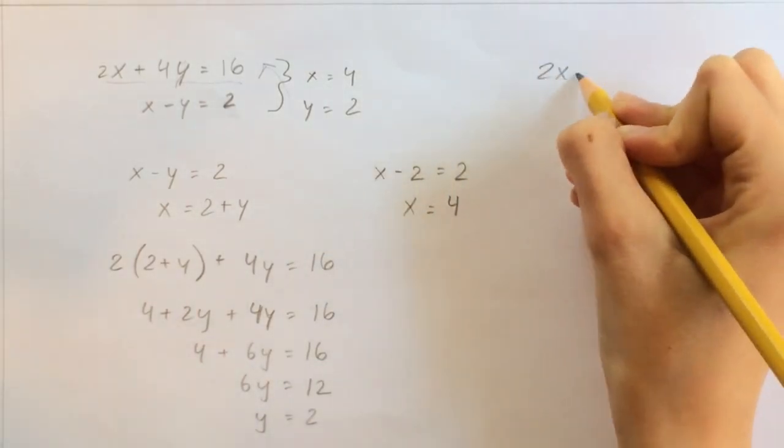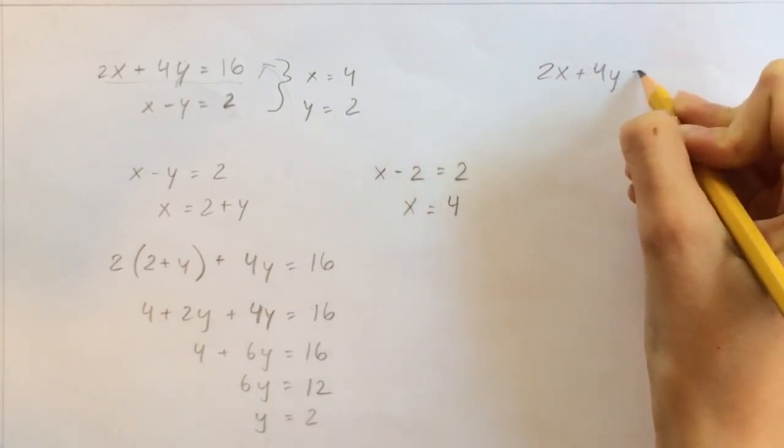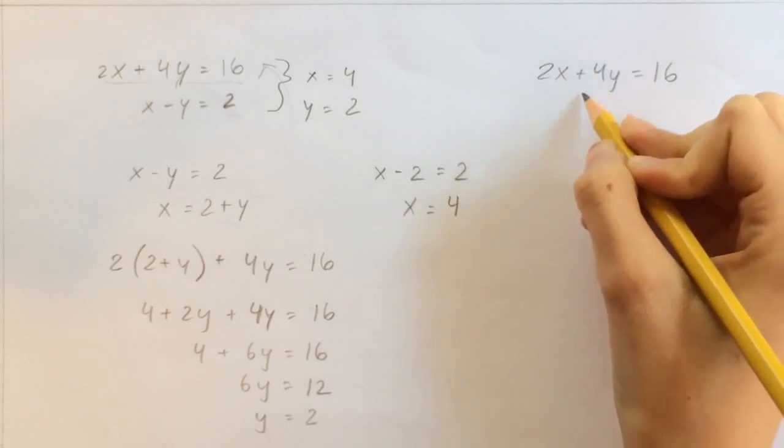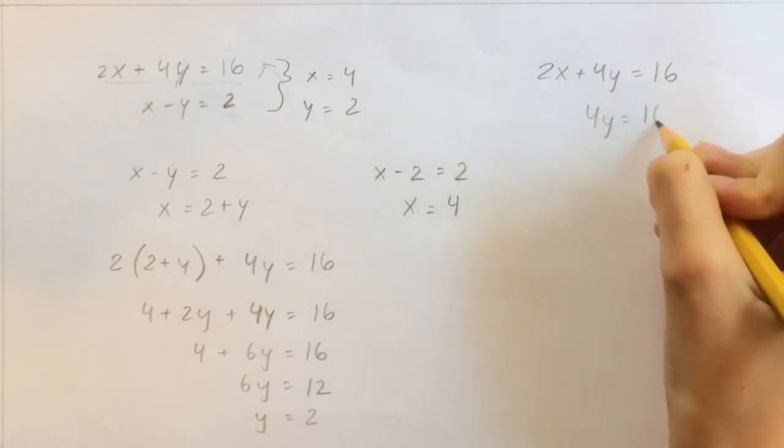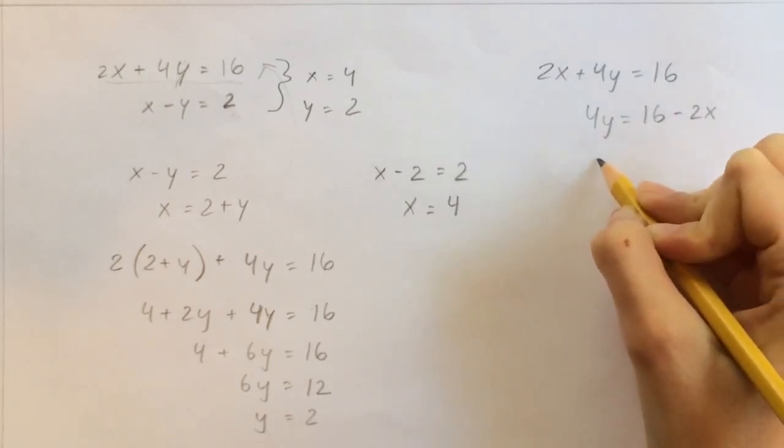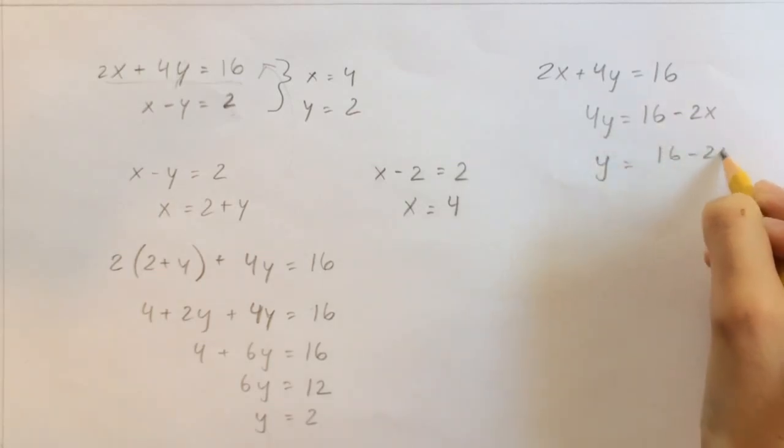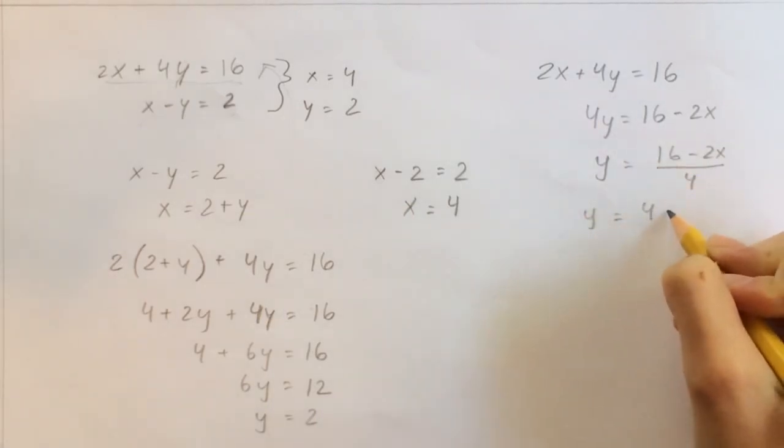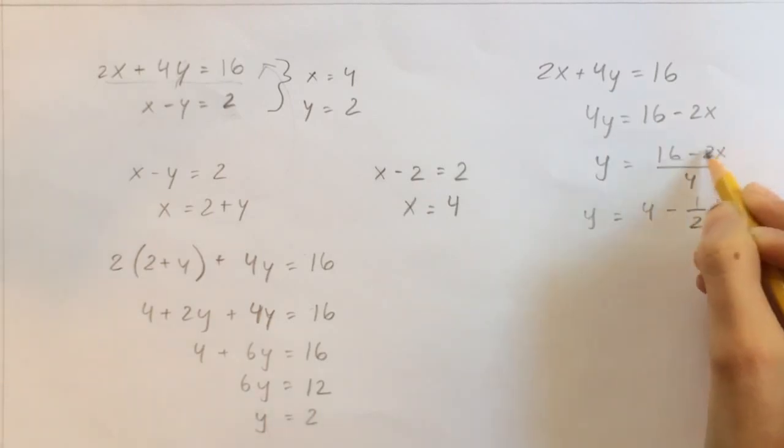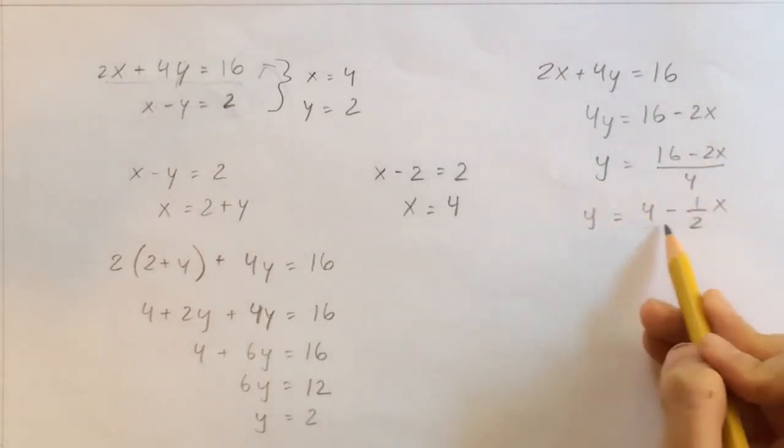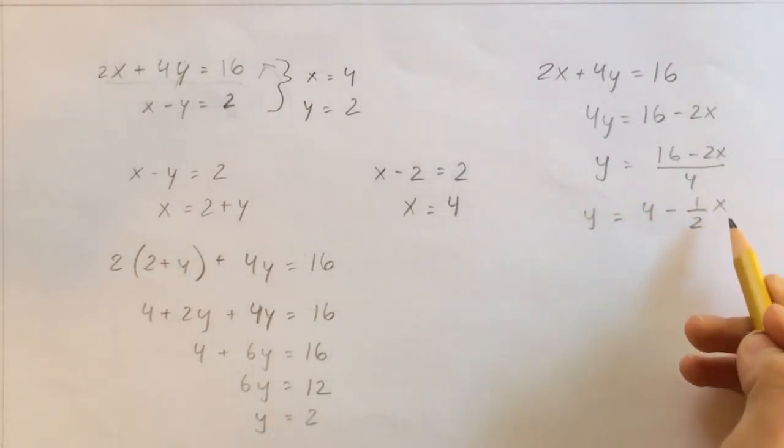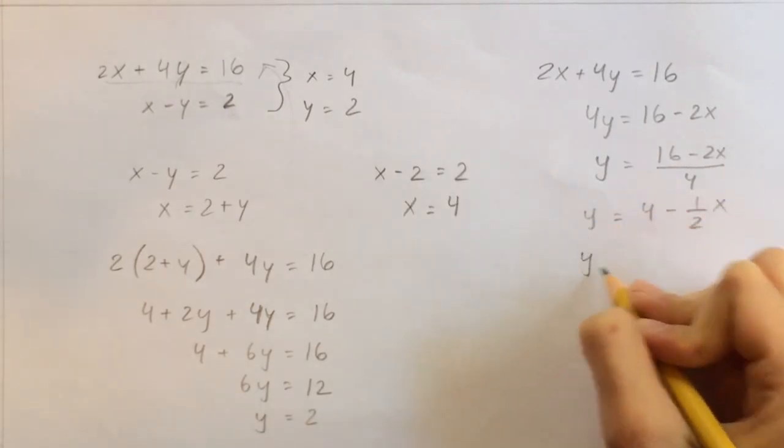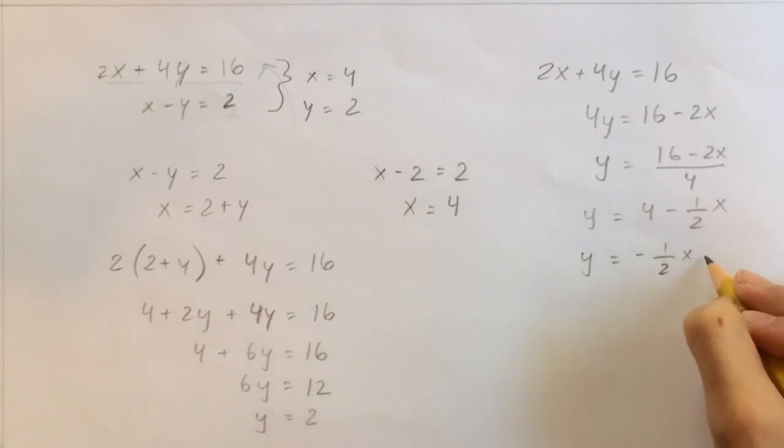So that would be, let's rewrite it, 2x plus 4y equals 16. And then we have 4y equals 16 minus 2x. And then we have y equals 16 minus 2x divided by 4. And that would be y equal 4 minus 1 half x, because minus 2 divided by 4 is the same thing as minus 1 half. And this is our equation. y equals mx plus b, except that the actual equation, it has the x first, so that would be y equal negative 1 half x plus 4. And this is our equation for this.